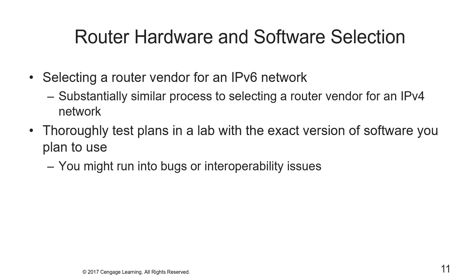Selecting a router vendor for a v6 network is substantially similar to selecting one for a v4 network, and almost all router vendors support v6. However, you need to get details about the extent of v6 support in the products, because many vendors have implemented only basic mandatory functions. You must thoroughly test your plans in a lab with the exact version of software you plan to use, because you might run into bugs or interoperability issues.